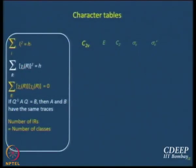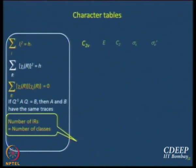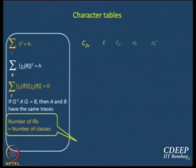Let us start working. The first question we ask is: what is the number of classes? There are 4 classes: E, C2, sigma_v, sigma_v dash — 4 classes. So there are going to be 4 irreducible representations. We are going to have 4 irreducible representations for C2V.